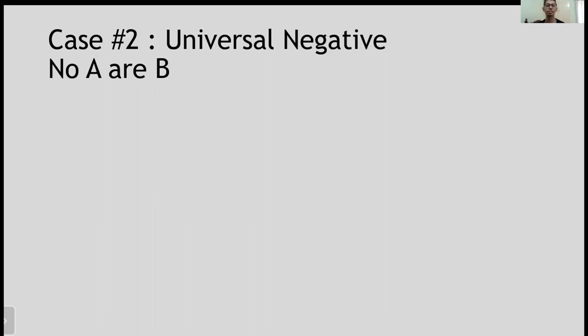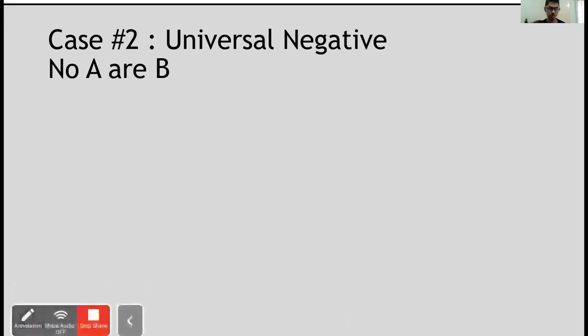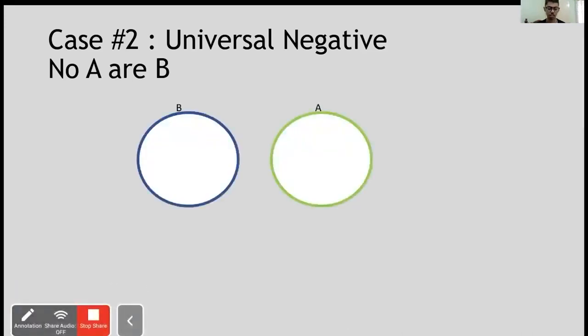Now case two, universal negative. So in all cases, everything would be negative or no. No A are B, or no apples are dogs, vegetables are animals, etc. We just have a simple Venn diagram for this, just a single Venn diagram. Very simple. There is no common point between A and B, there is no intersection between A and B. All you've got to do is draw two distinct circles, separate it properly, and you've constructed the Venn diagram for case two. Let's get to the next case then.